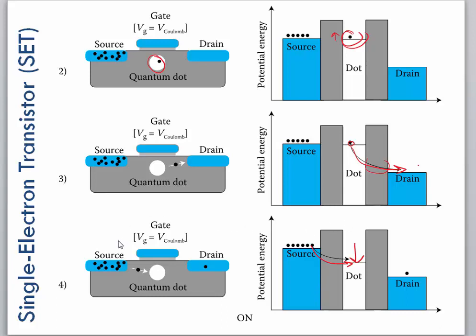So as long as we have a gate voltage V_G that's equal to V_Coulomb, we can have these electrons, one at a time, tunnel into the quantum dot and through the quantum dot to the drain.